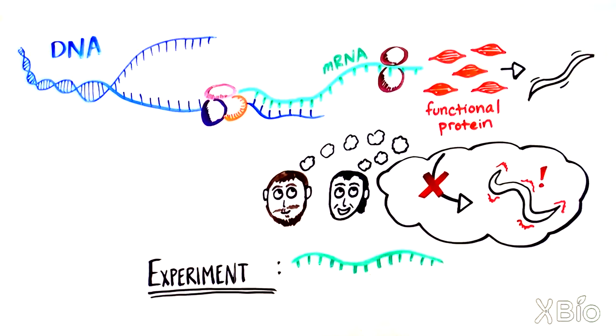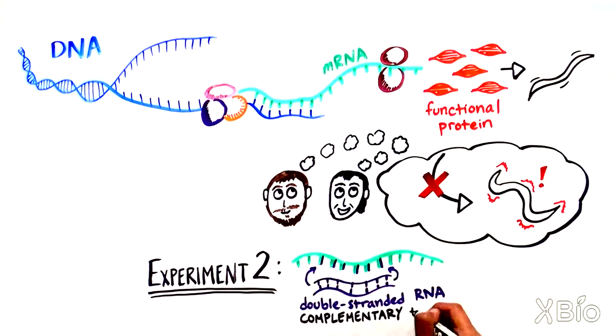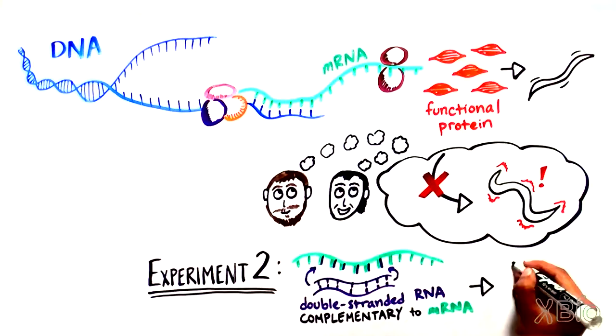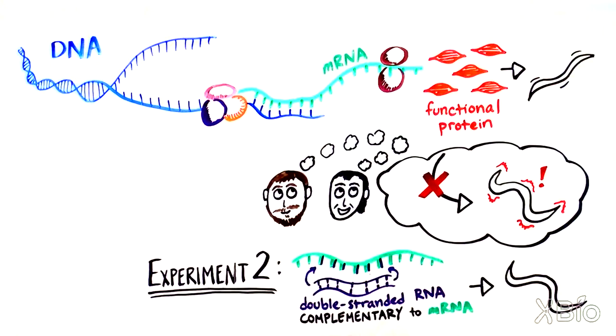Then, they tried pairing the ssRNA with a partner strand to create double-stranded RNA, and injected this double-stranded RNA into the worms as opposed to single-stranded RNA. To their surprise, the double-stranded RNA caused the worms to twitch.